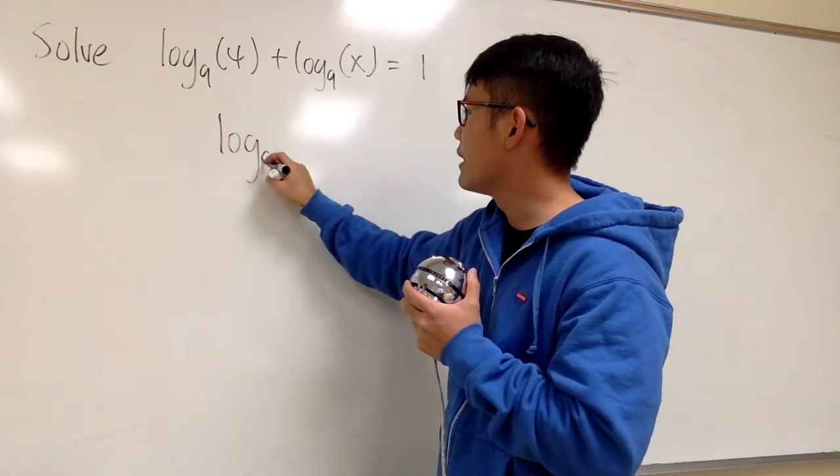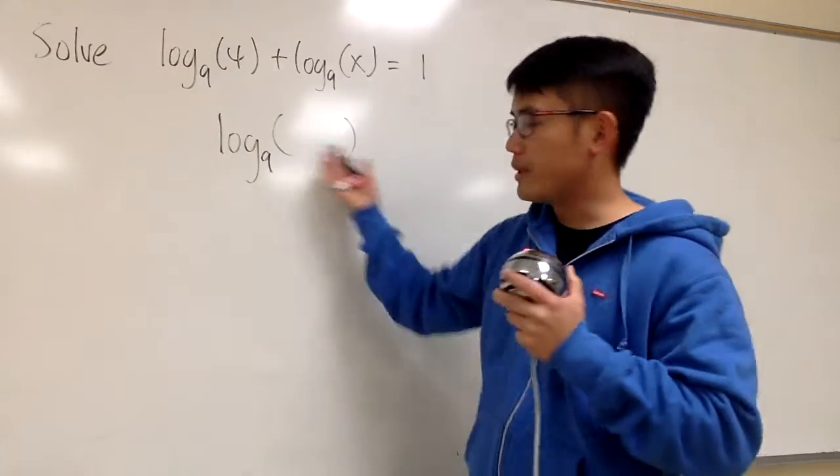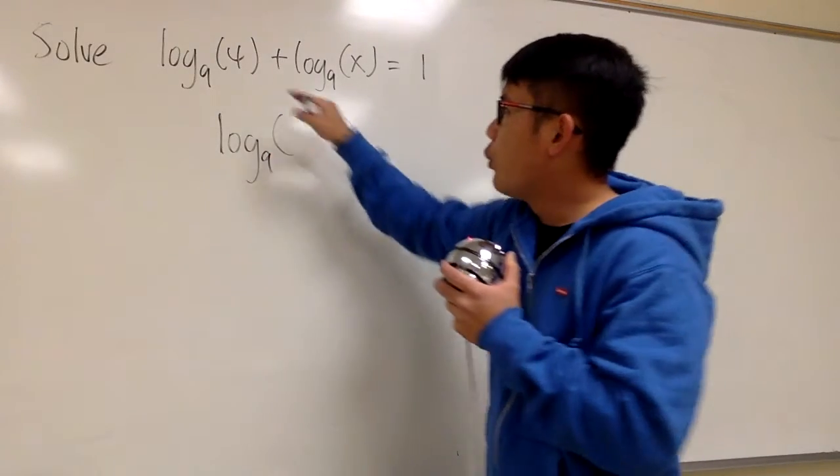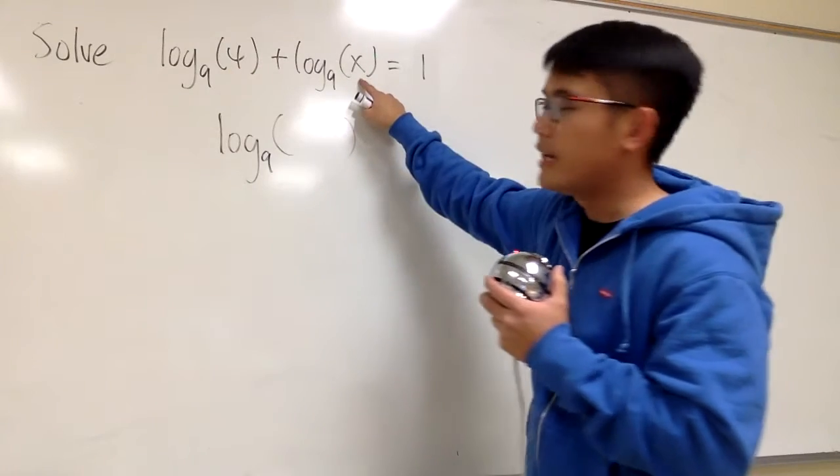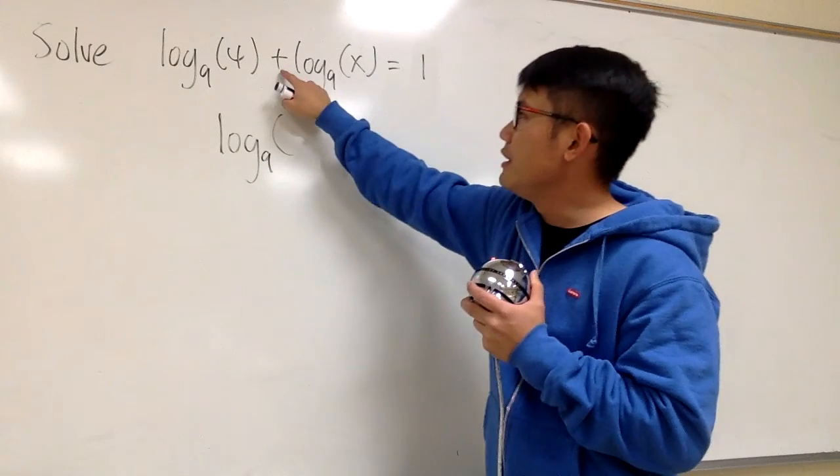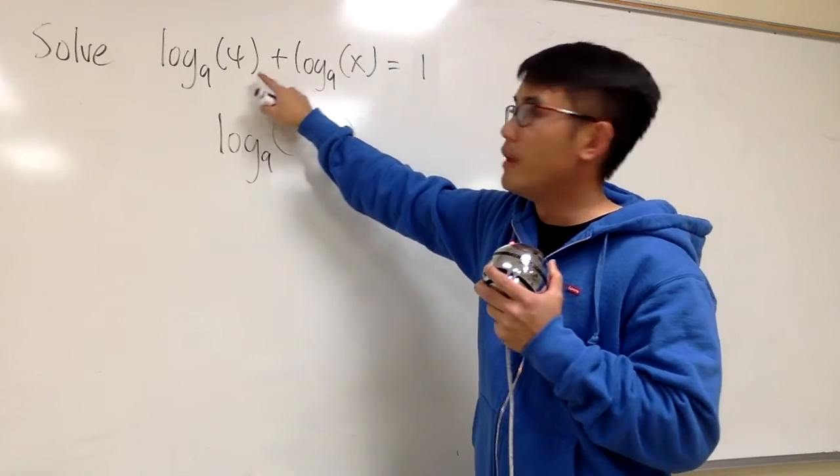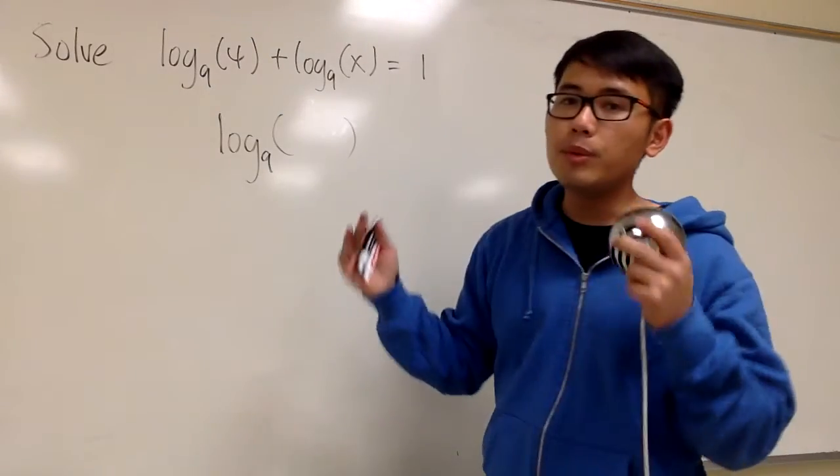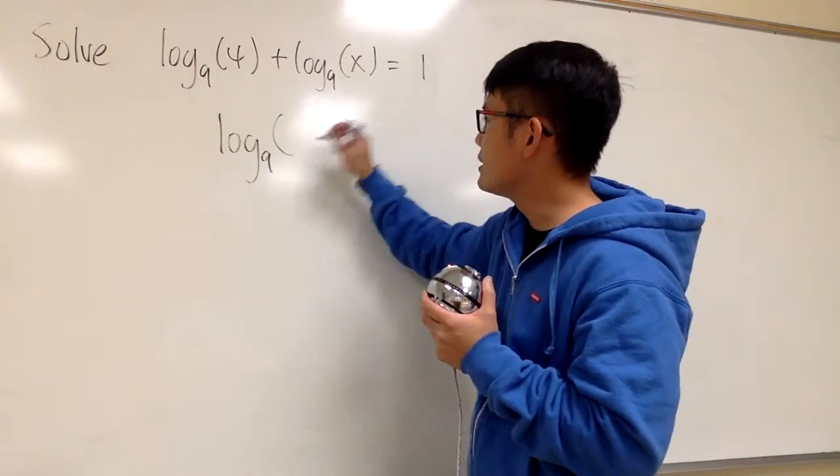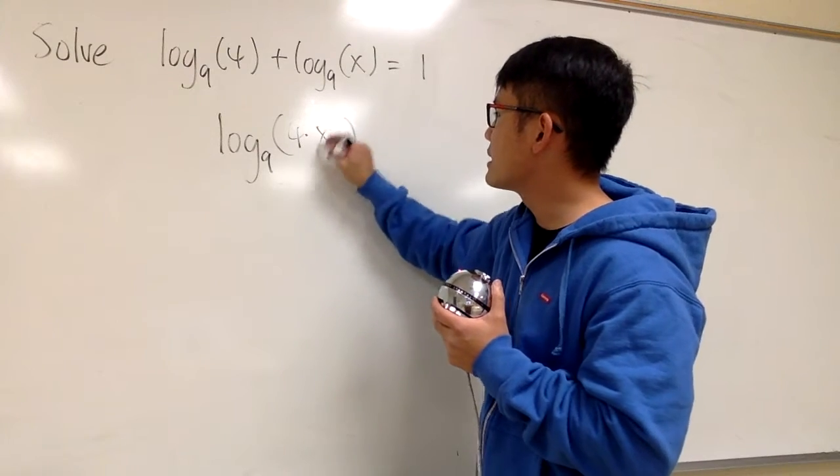So we still have log base 9, and let's put parentheses right here. What are we supposed to do with the 4 and the x? Well, in the addition situation, we put them together inside, and they will be multiplying. Therefore, we'll just write this down as 4 times x.